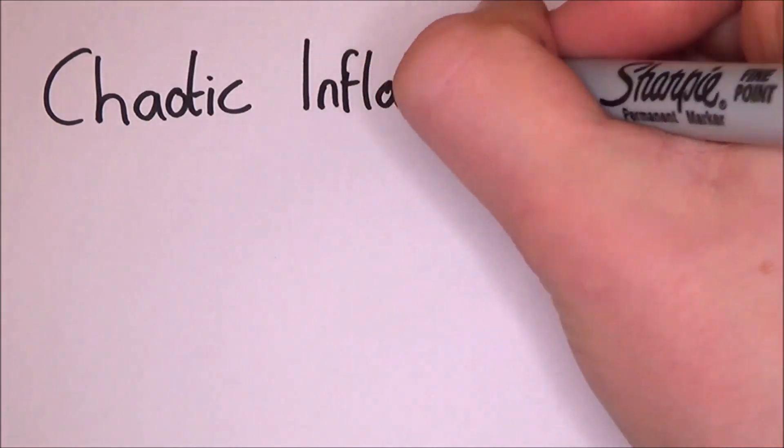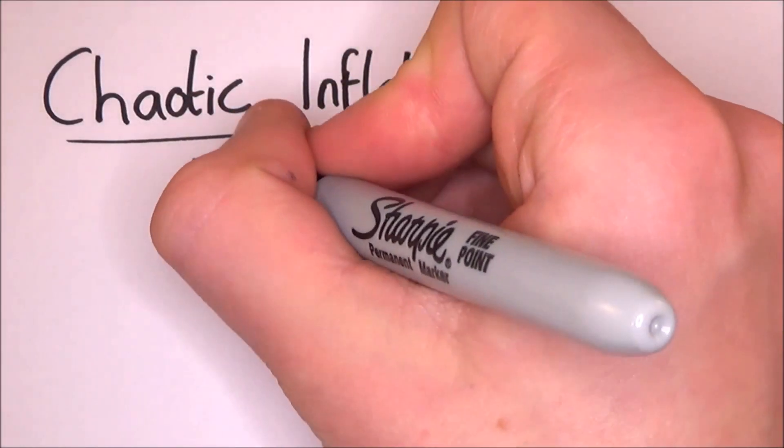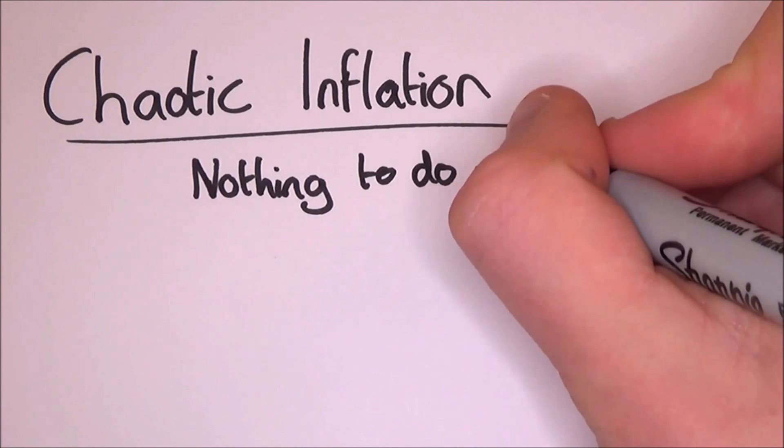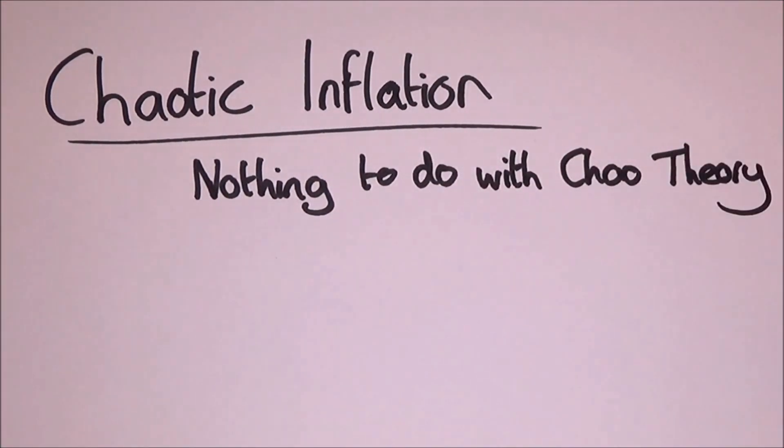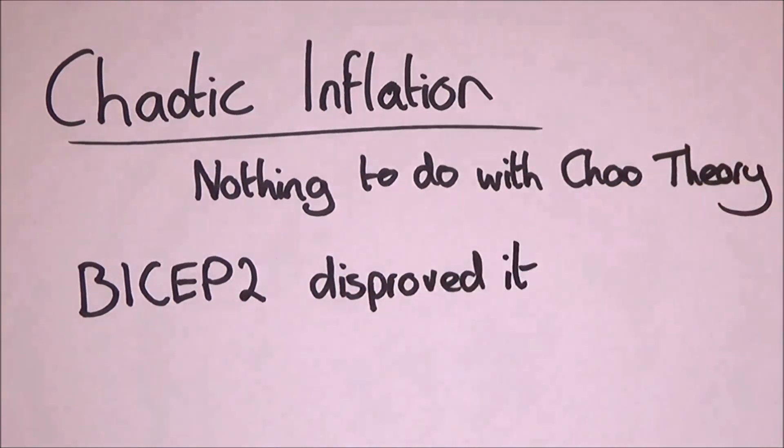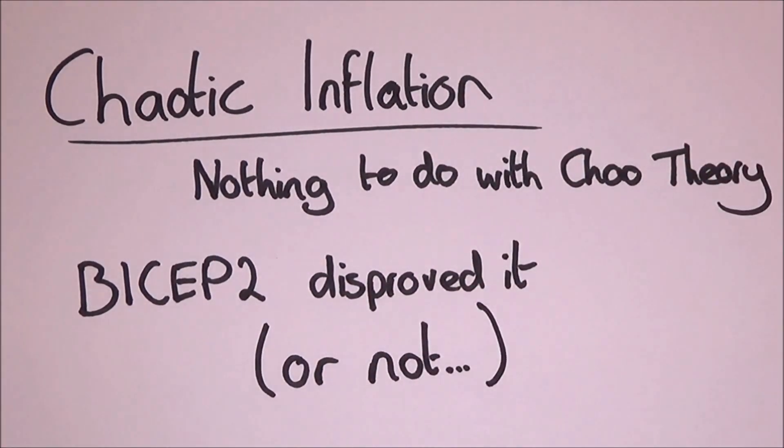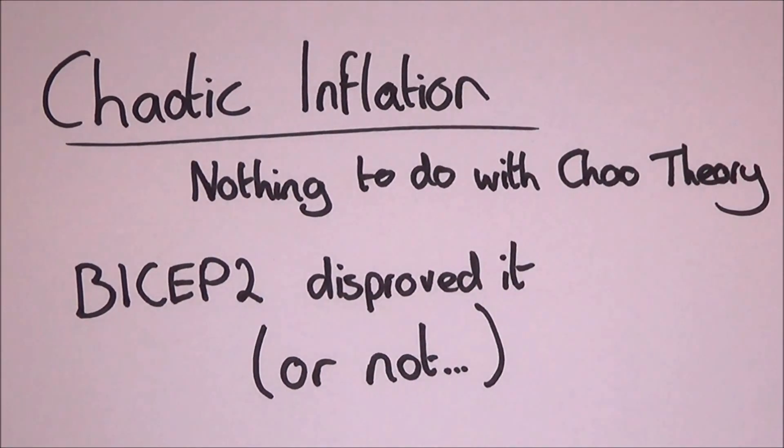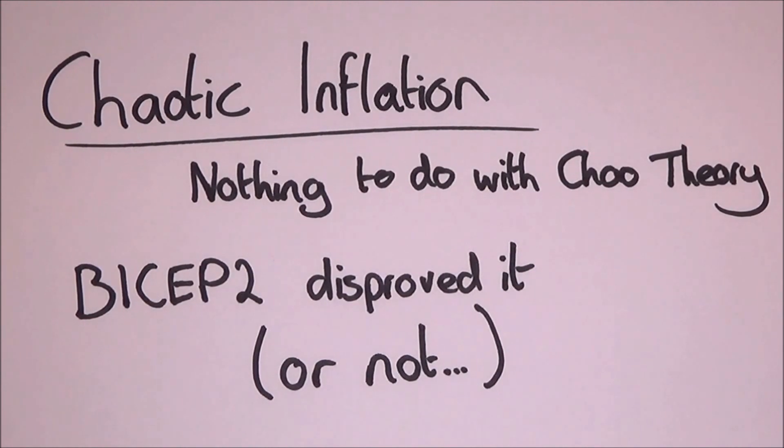Of course, the theory is still evolving today with additions such as chaotic inflation, which doesn't have anything to do with chaos theory, just to clear that up. In fact, it went under intense scrutiny recently when the BICEP-2 telescope in Antarctica thought they had disproved it, but it turned out to be cosmic dust, which had skewed the readings. Maybe one day there will be a complete theory for the early universe, but until then, this will have to do.